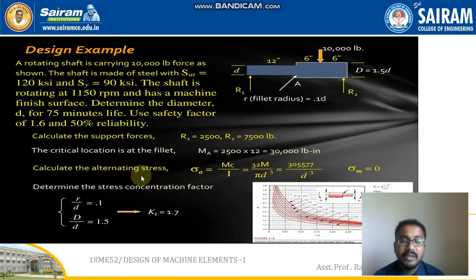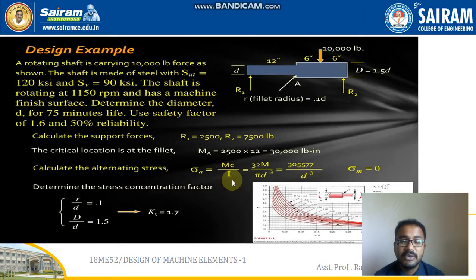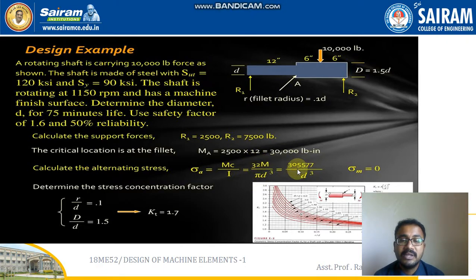We need to calculate the alternating stress. The alternating stress formula is MC/I, where I is the area moment of inertia. For a circular cross section, I = πD³/32. After substituting the moment value, the alternating stress simplifies to 305,577/D³.